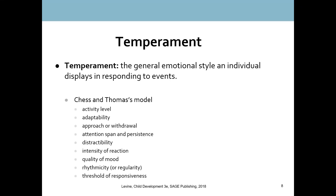The study was published in 1977, and it really began more research on temperament. In this major study, Chess and Thomas looked at nine characteristics that they believed contribute to a child's temperament.